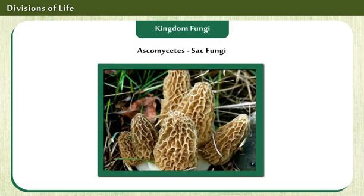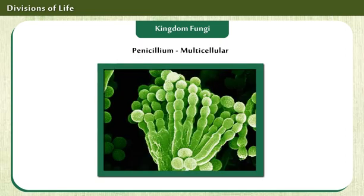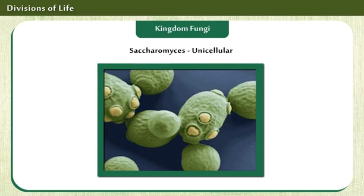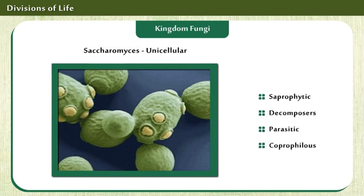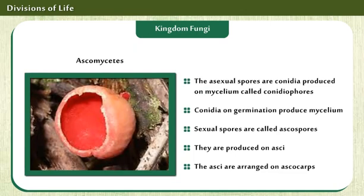Ascomycetes are called sac fungi. They are multicellular, like Penicillium, or unicellular, like Saccharomyces. They may be saprophytic, decomposers, parasitic, or coprophilous. Some of their features are displayed on the screen.